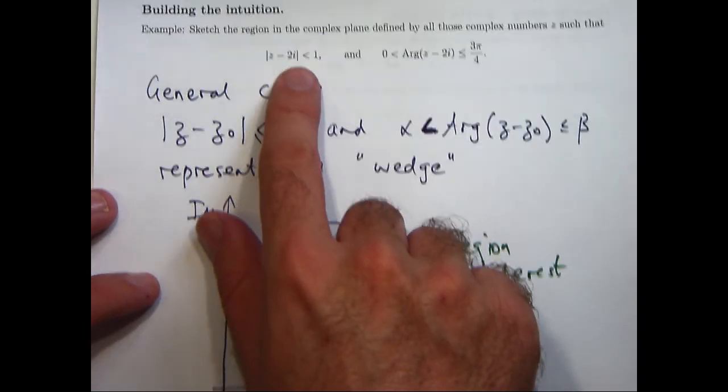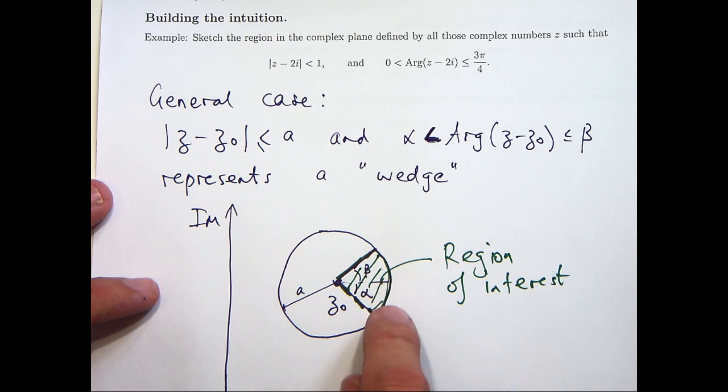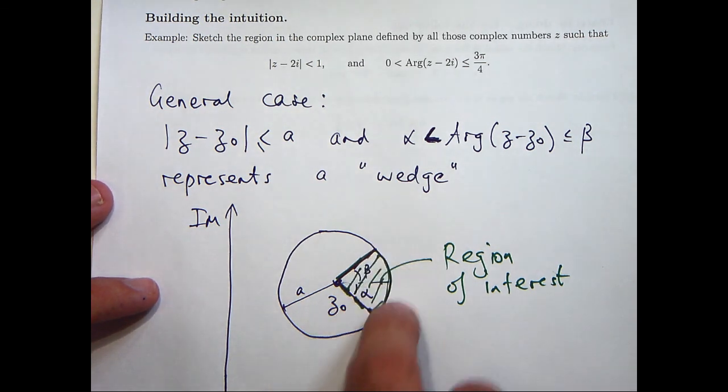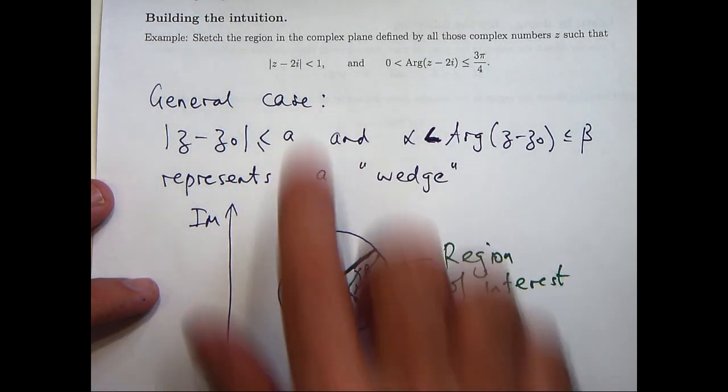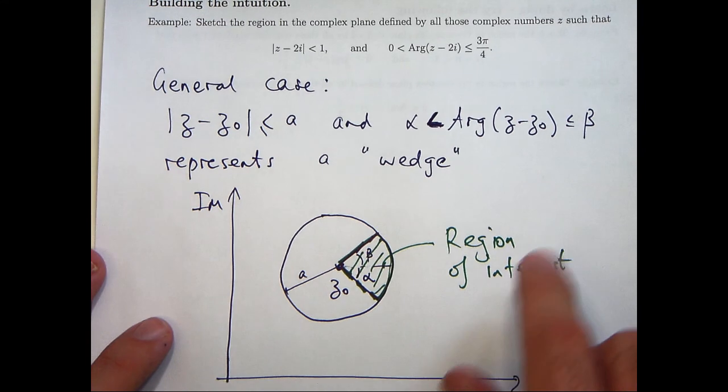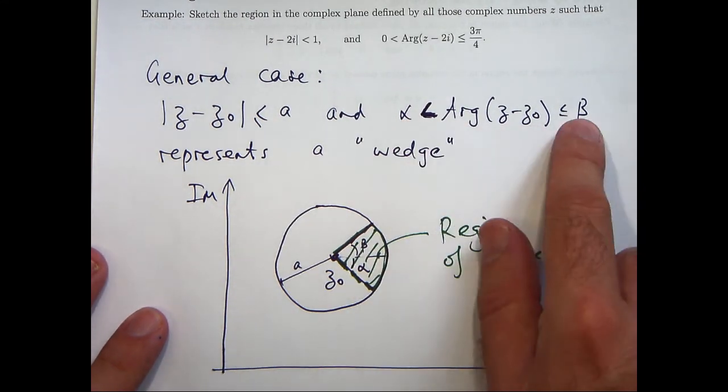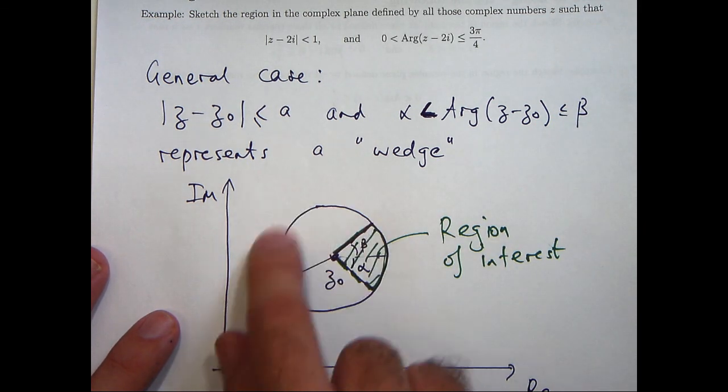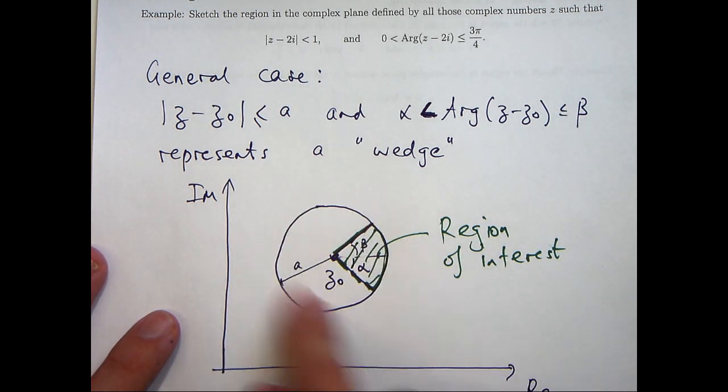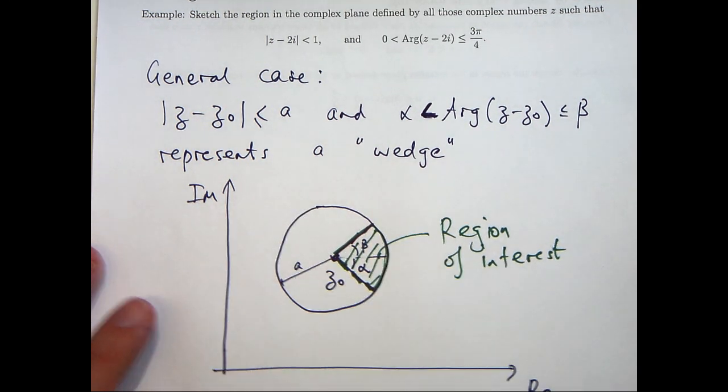So here is our general region of interest. So we don't include this edge here and you can see I've put in some dotted line there. Well our problem is similar but you see I've got a strictly less than here, so I would change this edge to a dashed edge because I don't include that edge. Now just before we do that, you can see, if alpha is minus pi and beta is positive pi, well this will extend all the way around. So we'll actually get a disk. So you can see how I'm using the word wedge quite liberally there.